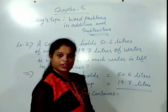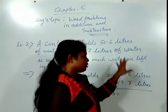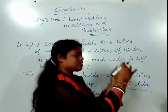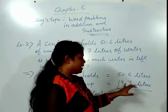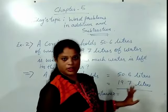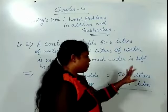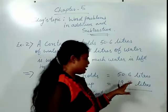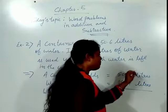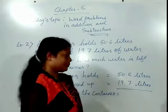So, the container is filled with 50.6 liters. From that 50.6 liters we used 19.7 liters. Now we have to calculate the remaining amount. We have to subtract 19.7 from 50.6. What we have to do? We have to do subtraction.